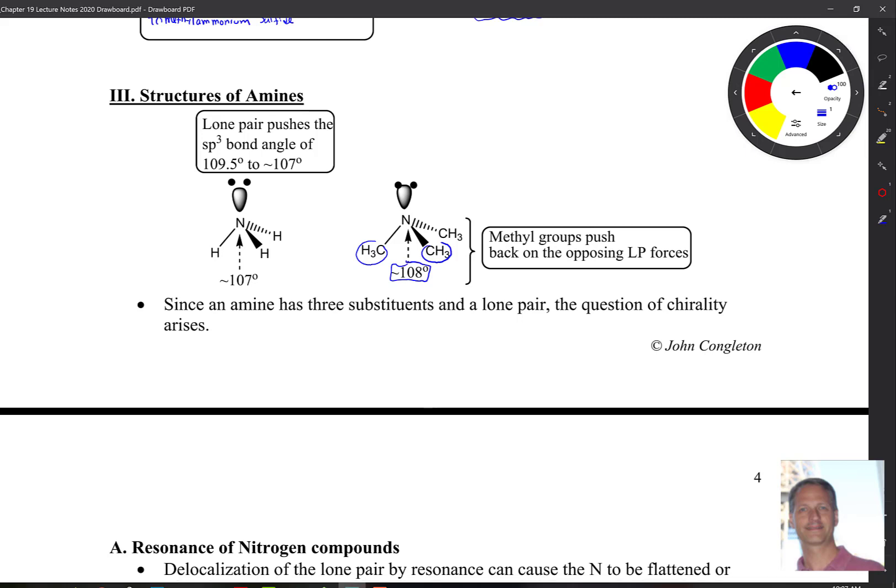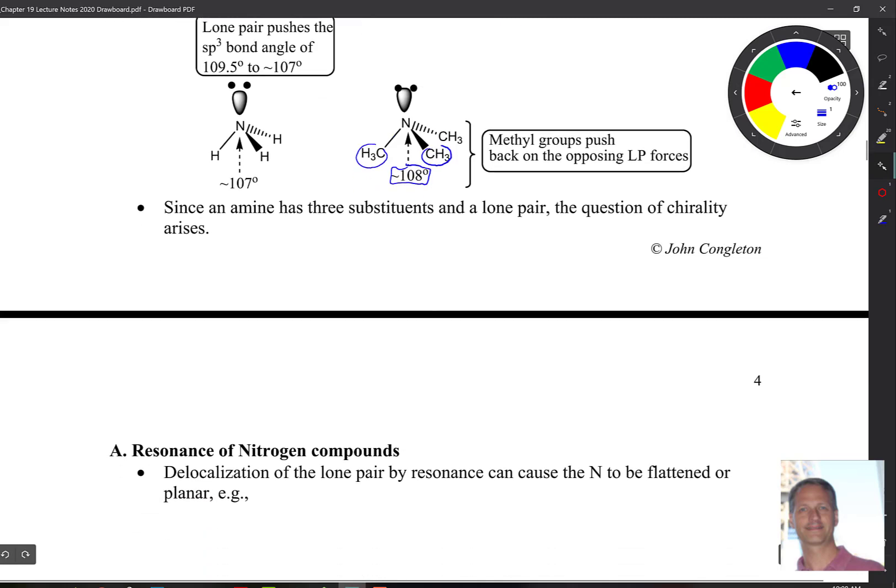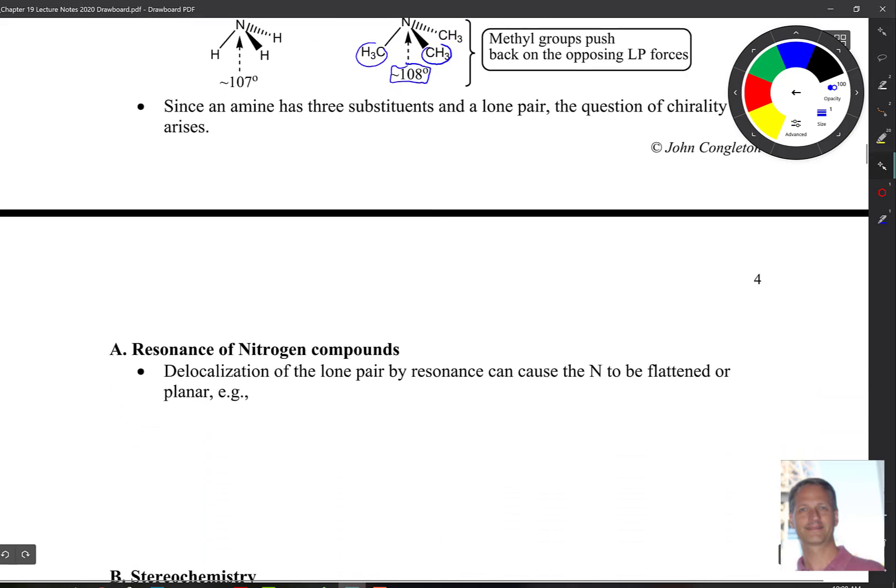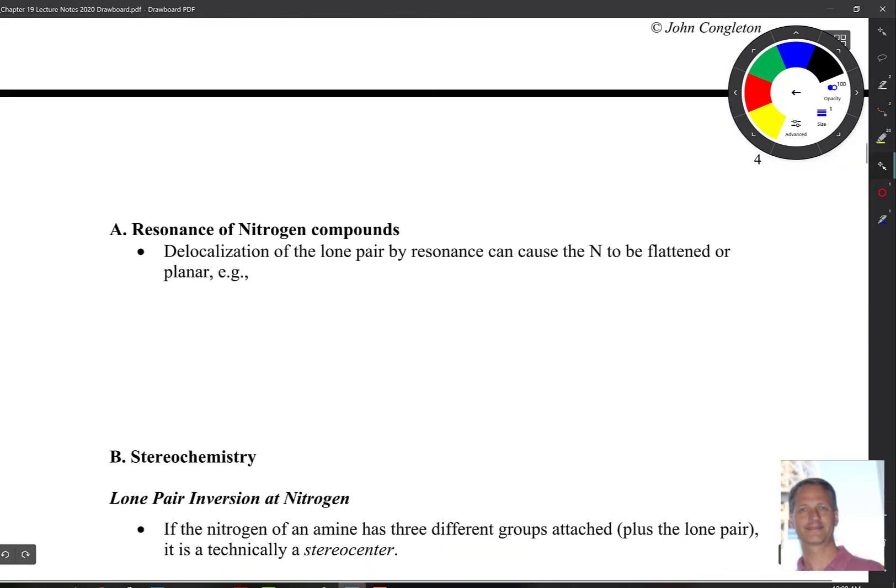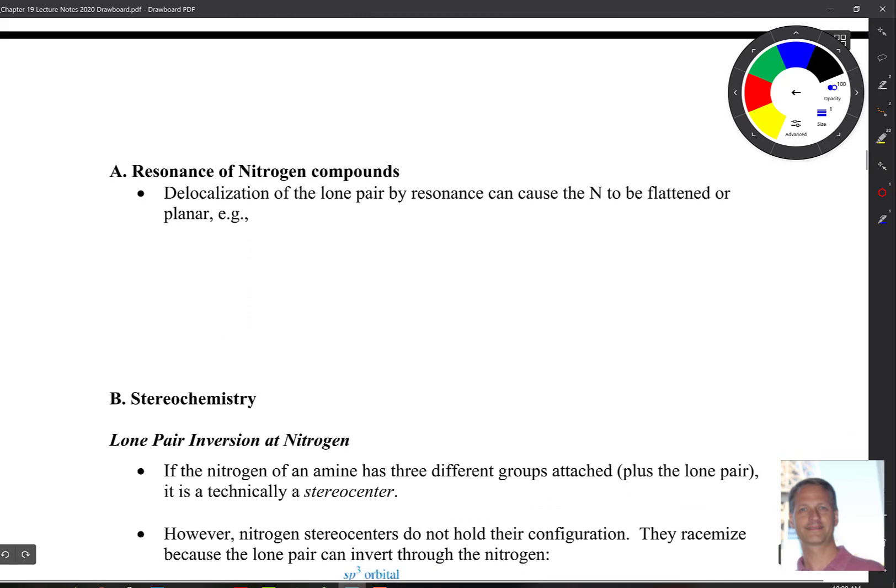Since there's the possibility of having three different groups on this molecule and a lone pair being an additional group, so four different things on nitrogen, we need to take a second and talk about chirality. Before we do that, we need to look at how resonance factors into the structure of nitrogen, and then that will lead us nicely into stereochemistry.